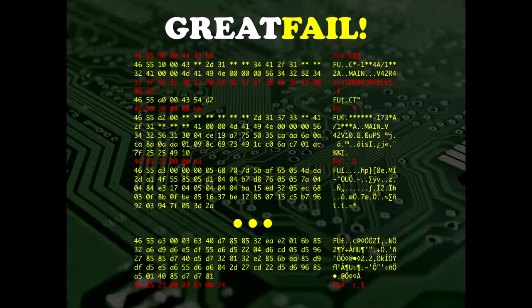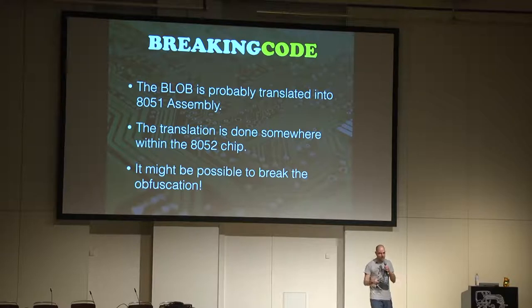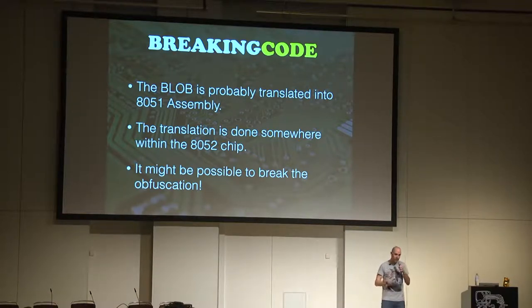What this means is that the serial protocol connects to the KVM and the lines go directly into the 8052 chip — everything is probably decoded inside the chip itself. We would have needed chemicals to open the chip, and we didn't want to do that. However, this failure told us something important: this blob must actually be translated somehow into 8051 assembly. Now we knew the destination language of the blob.